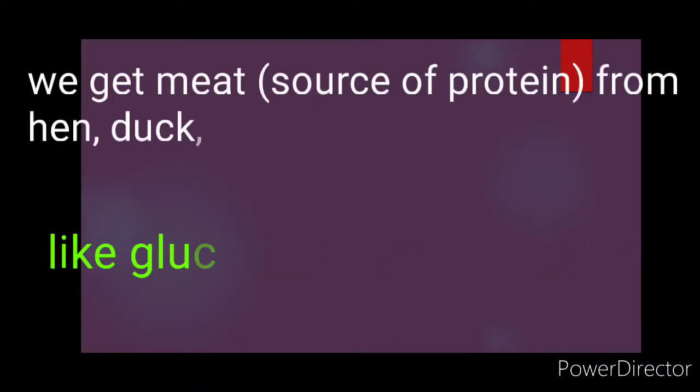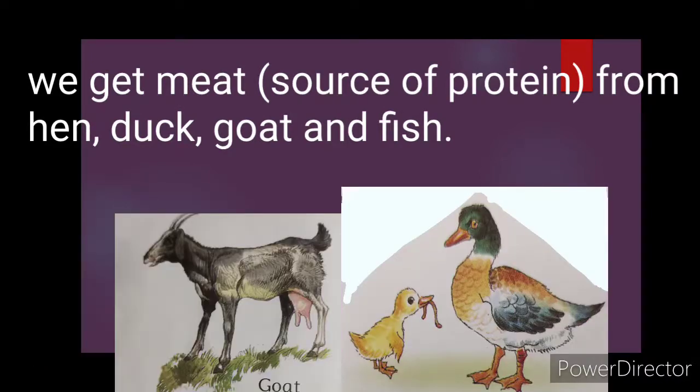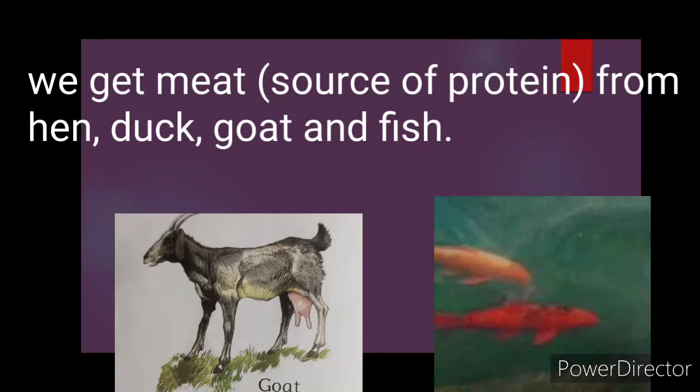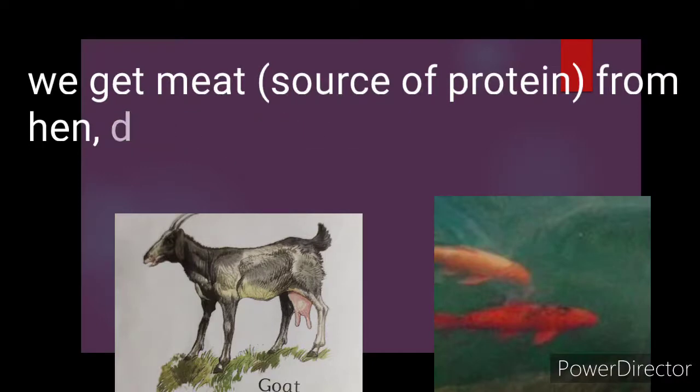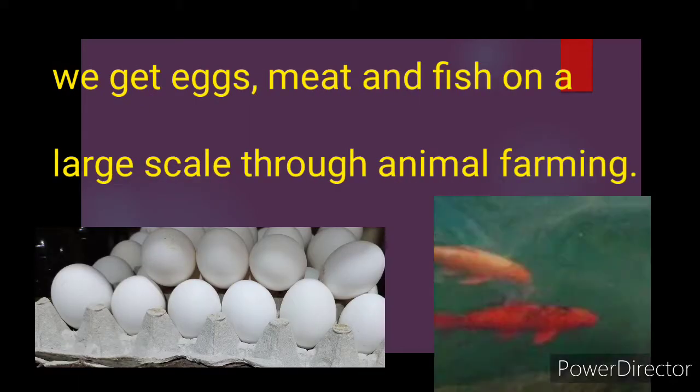We get meat from hen, duck, goat, and fish. We get eggs and fish on large scale through animal farming.